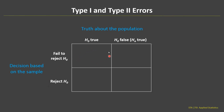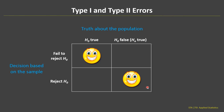If the null hypothesis is true and we fail to reject the null hypothesis, a correct decision was made — because the null hypothesis is true and we failed to reject it, so that's a good thing. Now if the null hypothesis is false and we reject that null hypothesis, again we've made the correct decision. That's a good thing.